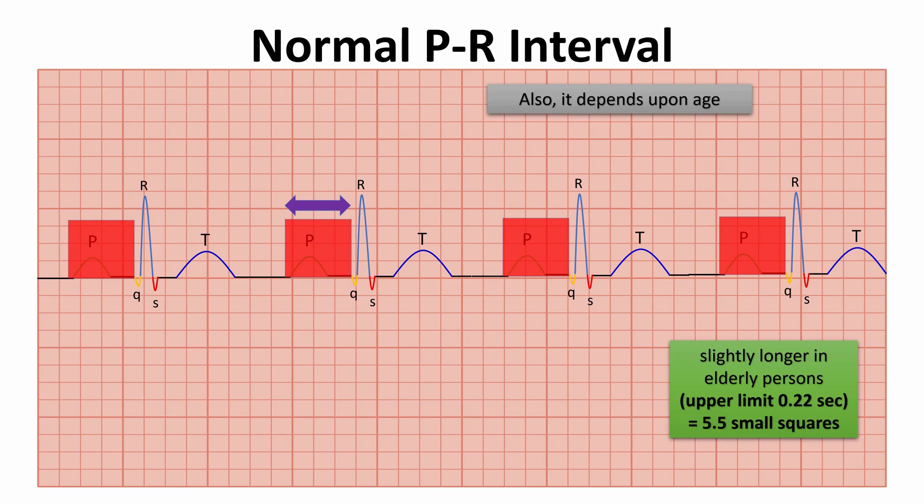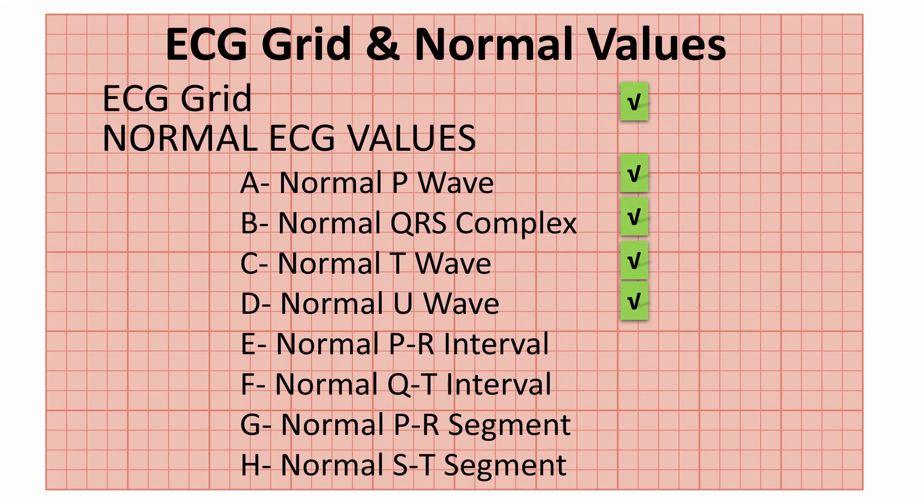So we have finished the ECG grid and the normal P wave, QRS complex, T wave, and normal PR interval values. We will continue our discussion about normal ECG values in the next videos. Now let's jump to the question of the day.